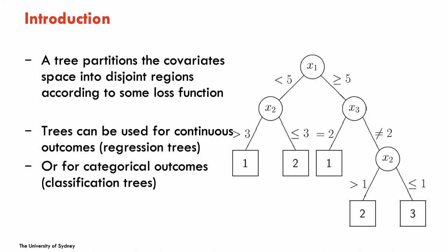A tree is constituted by nodes and branches. Here on the right side we have a classification tree — the predictions at the bottom are classes or categories: one, two, or three. At each node the tree has a predictor and a decision that splits that predictor. For example, for predictor x1, if x1 is less than five we go to the left side of the tree; if it's higher than five we go to the right. The splits at the nodes into two branches are done according to some loss functions.